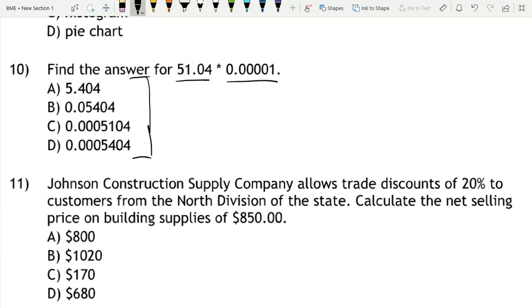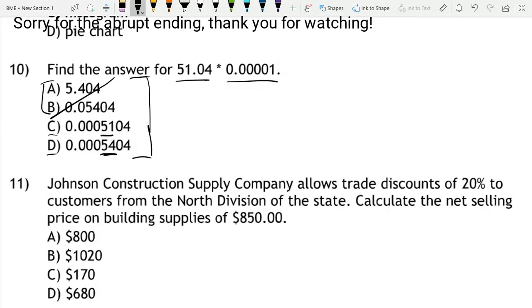You can already tell that these first two options are wrong because they don't go enough place values back. So just eliminate those two. Now you're between option C and D. Well, D goes 5, 4. This goes 5, 1. You can see that this number begins with 5, 1. So it's C.